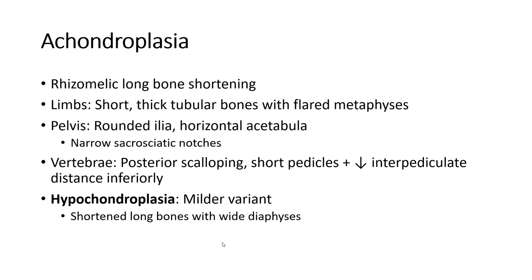Achondroplasia is a kind of rizomelic long bone shortening. The limbs are short with tubular bones showing flared metaphysis. The pelvis shows horizontal acetabular roof, with posterior scalloping of vertebrae and decreased inter-vertebral distance.